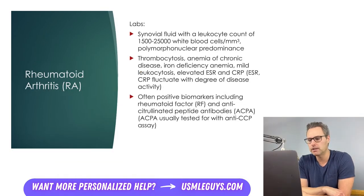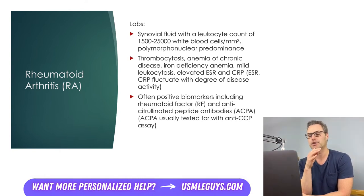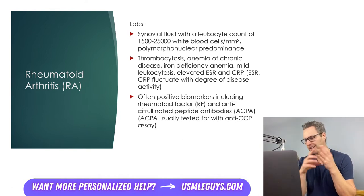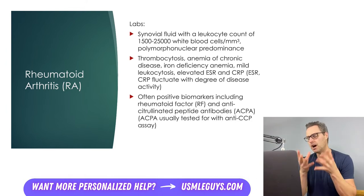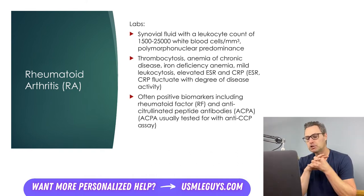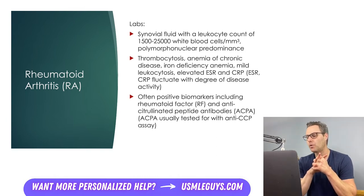The most important biomarkers for RA include rheumatoid factor and anti-citrullinated peptide antibody (ACPA), usually tested with an anti-CCP assay. Patients with positive biomarkers are considered seropositive RA. ESR and CRP are also helpful, as they fluctuate with disease activity — very active disease shows high ESR and CRP, while less active disease shows values closer to or within normal range. Patients with RA frequently have CBC abnormalities including thrombocytosis, anemia of chronic disease, iron deficiency anemia, and mild leukocytosis. Synovial fluid in RA shows a leukocyte count of 1,500 to 25,000 white blood cells per millimeter cubed with a polymorphonuclear predominance.